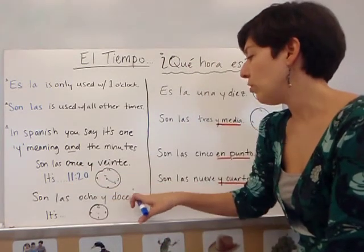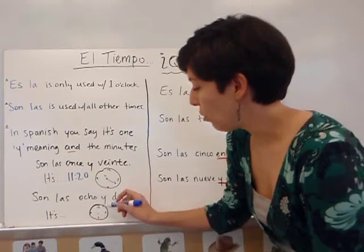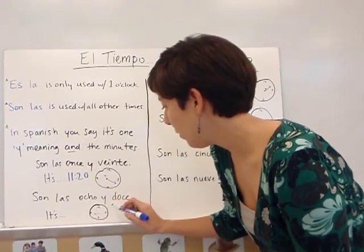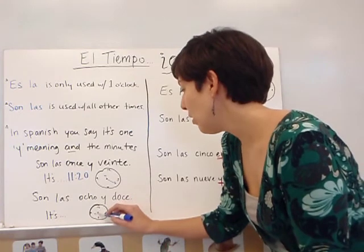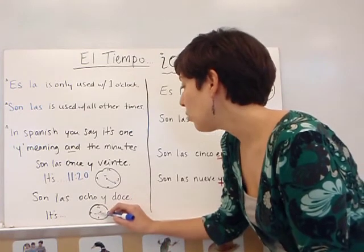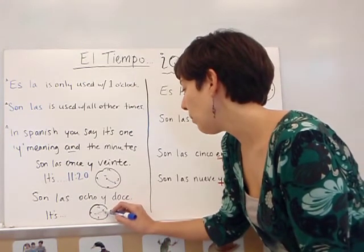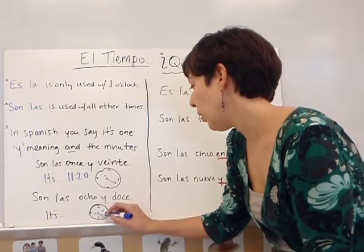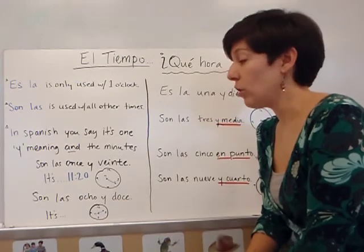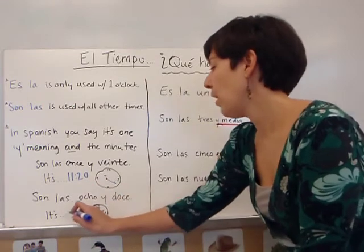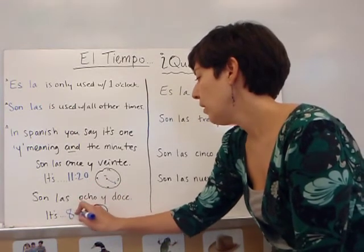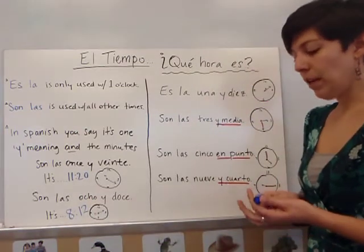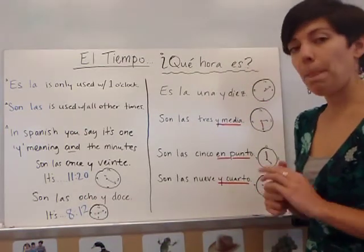And here we have son las ocho y doce. Ocho is right before the nine, so I'm going to draw the little hand in that direction. Y doce is twelve, so my big hand is going to go just before the fifteen. Your clocks don't have to be perfect, but they should give you the general idea. To write it down, you would write it as 8:12. And that is how you tell time in español.